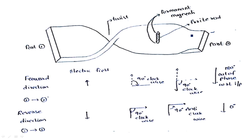This ferrite rod will make another 90 degrees phase shift, so that totally it gives 180 degrees phase shift in the forward direction. The ferrite material gives a phase shift of 90 degrees in the clockwise direction — whenever the electric field touches it, a clockwise rotation occurs in the electric field giving a 90 degrees phase shift.